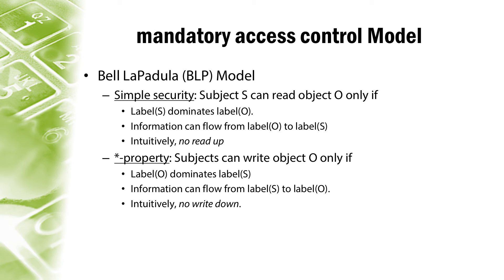Conversely, users can view content only at or below their own security level — secret researchers can view public or secret files, but may not view top secret files. No read up. The strong star property is an alternative to the star property, in which subjects may write to objects with only a matching security level. Thus the write-up operation permitted in the usual star property is not present, only a write-to-same operation. The strong star property is usually discussed in the context of multilevel database management systems and is motivated by integrity concerns.